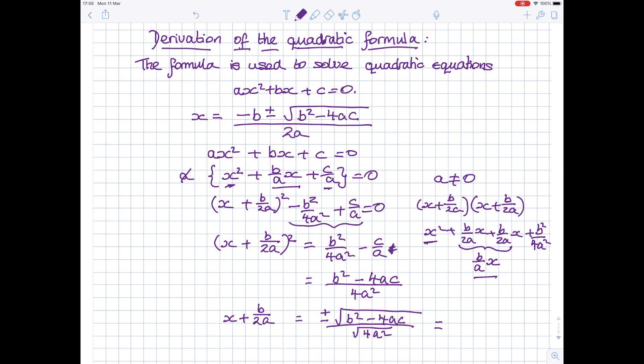Now, the top I can't do anything with, so I'm going to leave it as plus or minus the square root of b squared minus 4ac. The bottom, the square root of 4a squared is 2a.